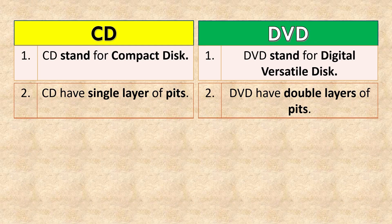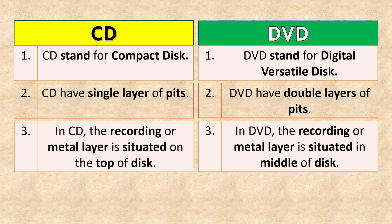CD has a single layer of pits, while DVD has double layers of pits. In a CD, the recording or metal layer is situated on the top of the disc. In a DVD, the recording or metal layer is situated in the middle of the disc.